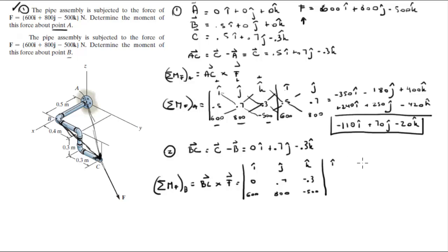So you draw your first and second column again, 0.7, 600, 800, and you do your positive diagonals. Positive diagonals come out to be negative 350I, minus 180J, plus 0K.